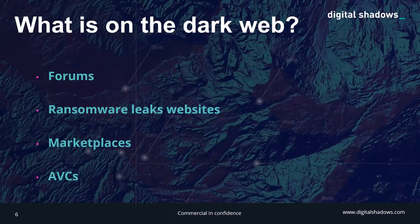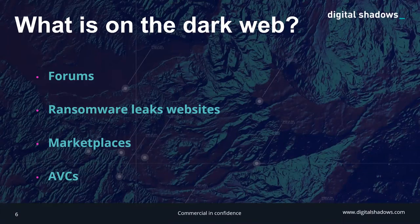Now that's out of the way, what horrors are stored on the dark web? Honestly, probably what you'd expect — drugs, paraphernalia, weaponry, pornography, and cyber threat actors discussing attacks they've conducted or are planning. In terms of websites and services available, they can be broken down into four types: forums, ransomware leak sites, marketplaces, and automated vending carts (AVCs).